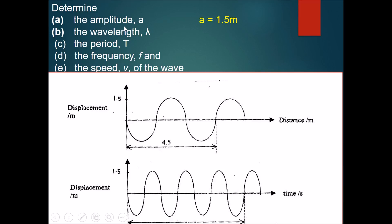For the wavelength, we should use the displacement-distance graph. Looking at this graph, we can see a total length of 4.5 meters, which contains one loop downwards, one loop upwards, and one more loop downwards — making a total of three loops.